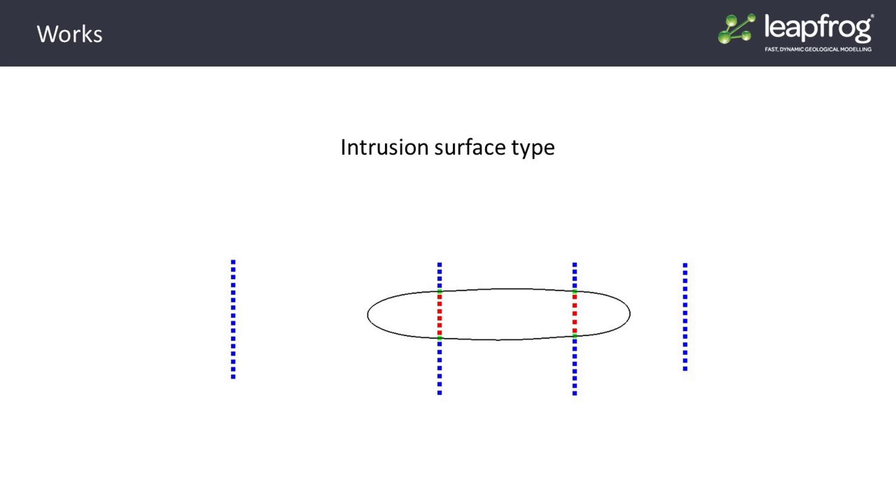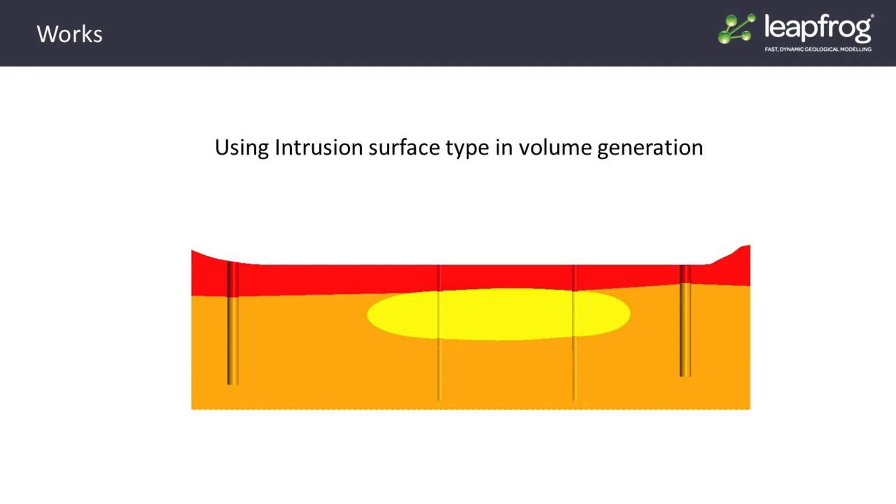The points are made up of contact points and volume points. As we can see, the contact points are green and represent the point at which the two units contact against each other. The volume points represent the inside, as we see here in red, and the outside, as we see here in blue, of that surface. When we create volumes, it looks something like this.